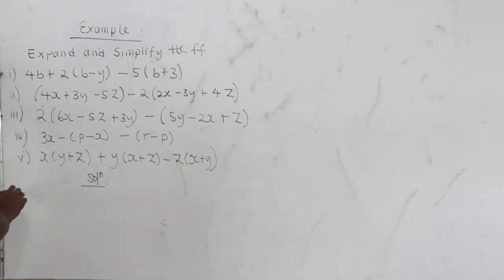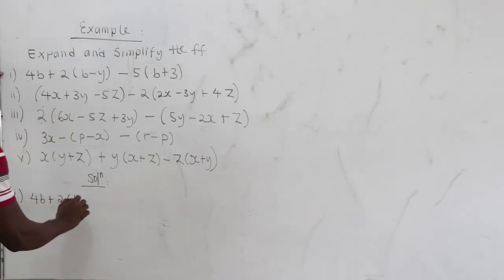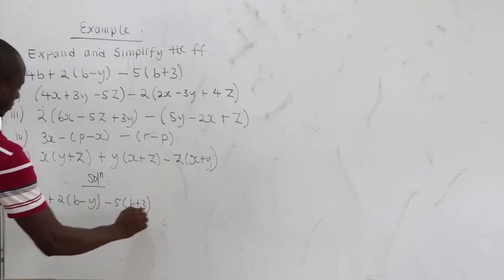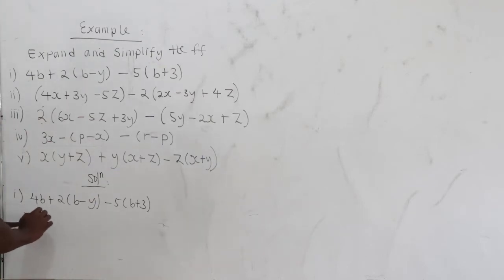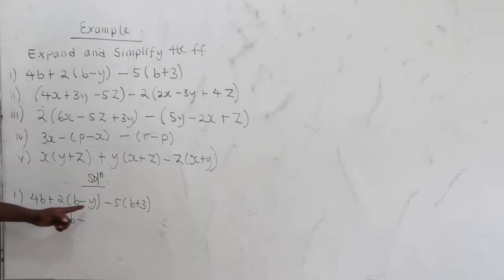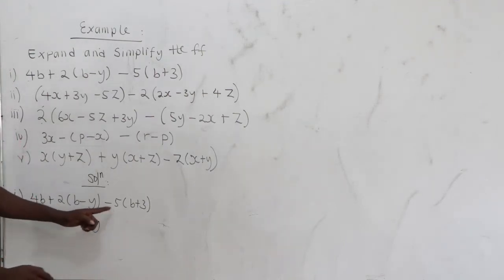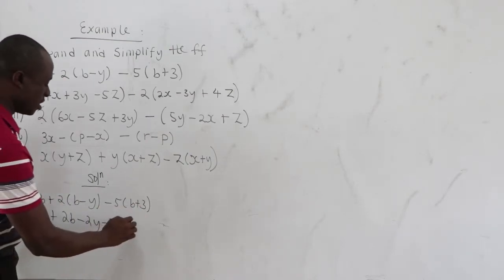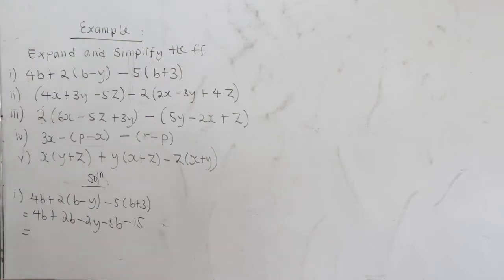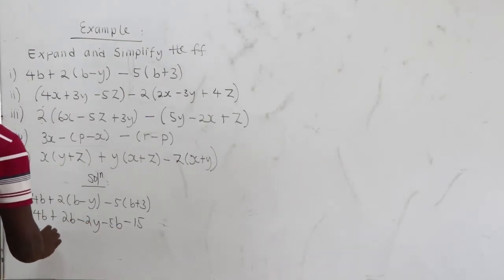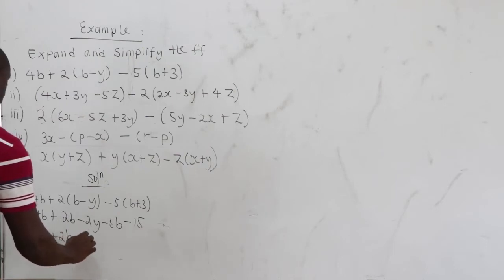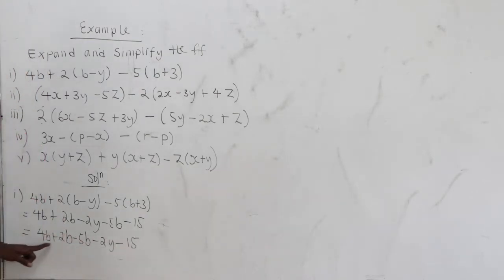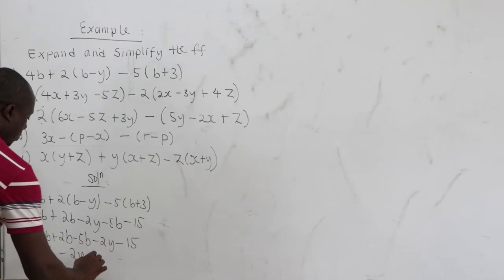Next example, first: 4b plus 2 times b minus y minus 5 times b plus 3. Expanding: 2 times b equals 2b, 2 times negative y equals negative 2y. Negative 5 times b equals negative 5b, negative 5 times 3 equals negative 15. Grouping: 4b plus 2b minus 5b equals b. So the answer is b minus 2y minus 15.